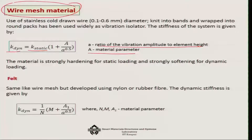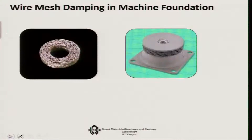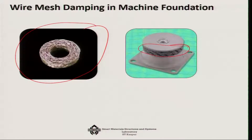A very similar material to wire mesh is felt material, but it is generally made of nylon or rubber fiber. In this case, the dynamic stiffness is given by a relationship involving three material parameters N, M, and A1. The wire mesh material looks like a typical mesh pad and is used as an isolator element for machine foundations — so vibration at the machine will not be transmitted to the base, keeping the base vibration-free.